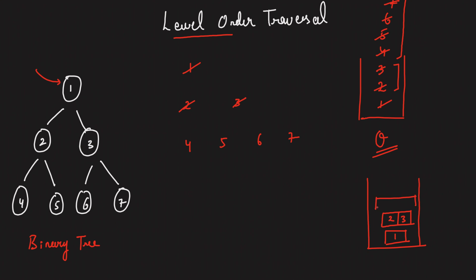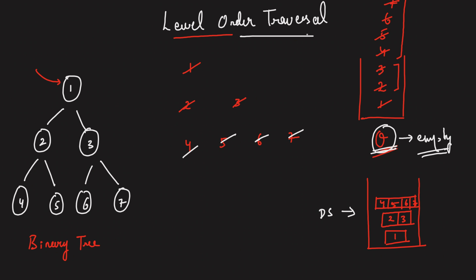Now take these 4 guys out, put it into a vector, and put this into your required answer data structure — which is 4, 5, 6, and 7. So once this is done, you can say your traversal is completed. And if you carefully observe, your queue data structure is indeed empty now. Whenever this is empty, you can say this data structure stores your level-ordered traversal.